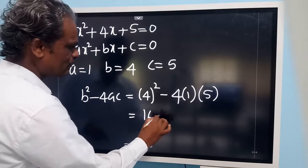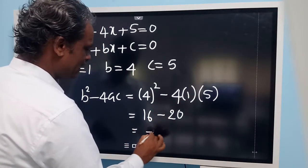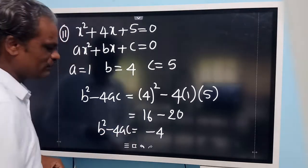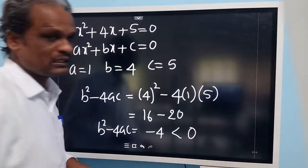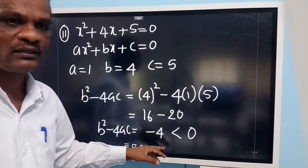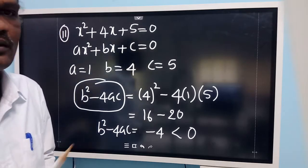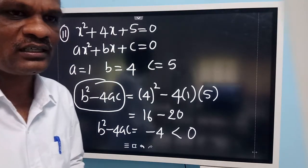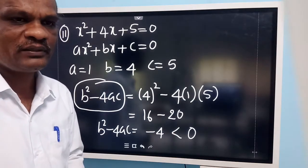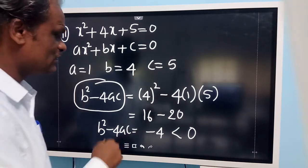Before applying the quadratic formula, let us find out the value of b squared minus 4ac. b squared is 4 squared, which is 16, minus 4 into a which is 1, into c which is 5, that is 20. So we get 16 minus 20 equals minus 4. Since b squared minus 4ac is minus 4, it is less than 0 — we are getting a negative number.